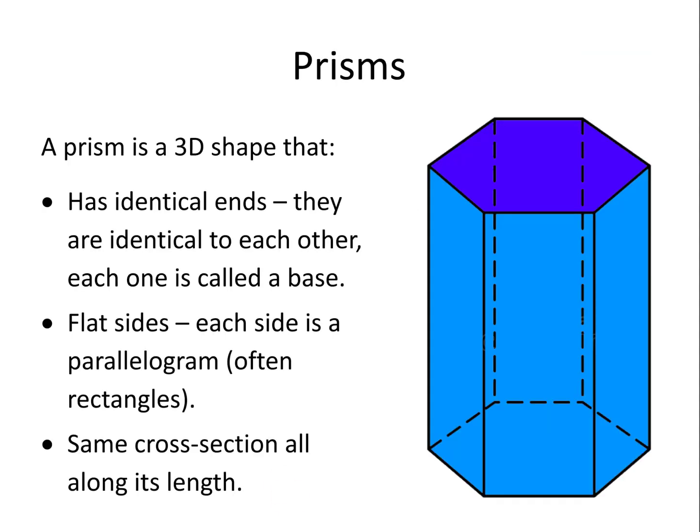Prisms and Pyramids. A prism is a shape that has identical ends called bases and flat sides between the two bases that are parallelograms and often, as in the case here, rectangles. If you cut a prism along its length, each cross section will be the same size and shape.